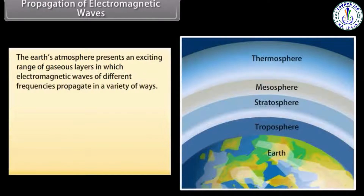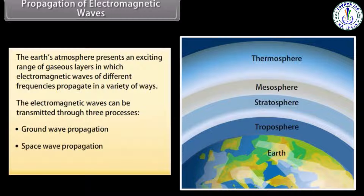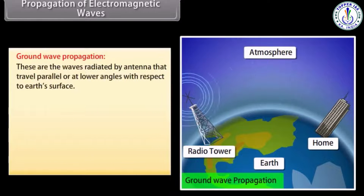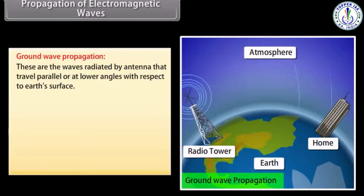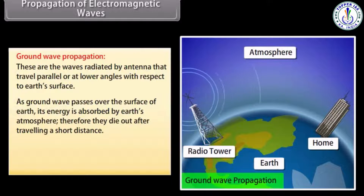Propagation of electromagnetic waves: the earth's atmosphere presents an exciting range of gaseous layers in which electromagnetic waves of different frequencies propagate in a variety of ways. Electromagnetic waves can be transmitted through three processes. Ground waves are waves radiated by antennas that travel parallel to or at low angles with respect to the earth's surface. As a ground wave passes over the surface of the earth, its energy is absorbed by the atmosphere, so they die out after traveling a short distance.